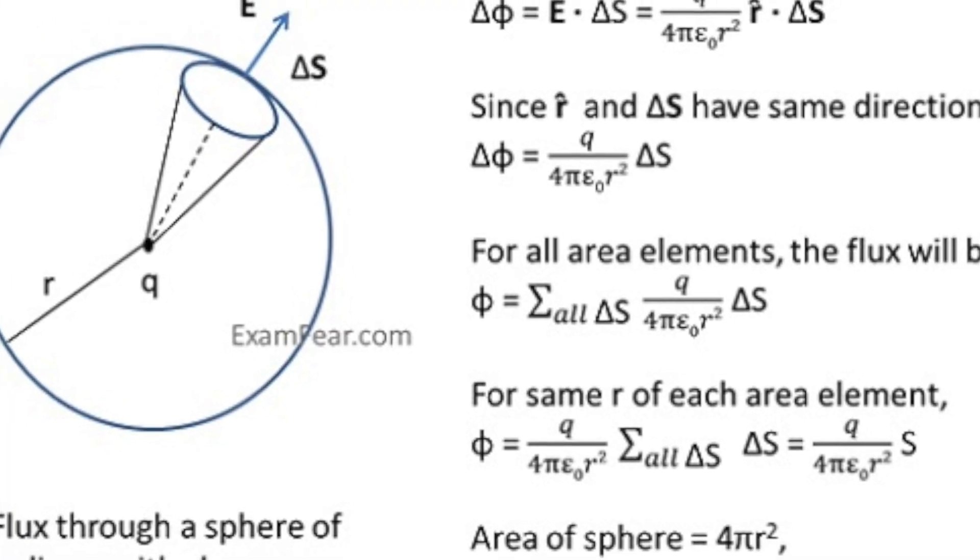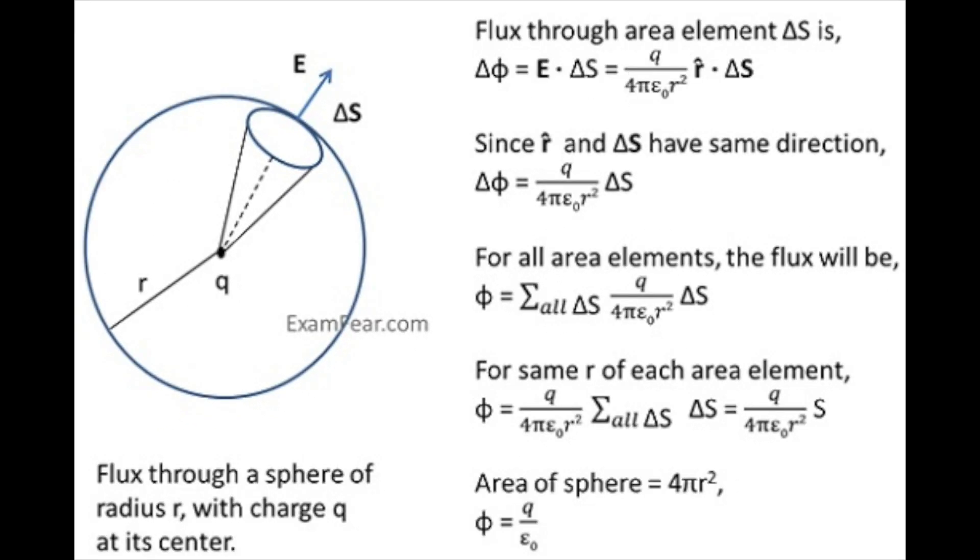In this video we'll talk about Gauss's law of electrostatics. Electric flux flowing through an area is defined as the electric field multiplied by the area of the surface projected in a plane perpendicular to the field.